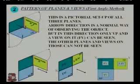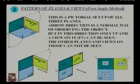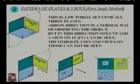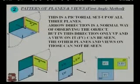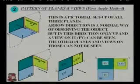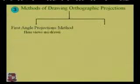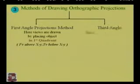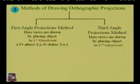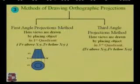This is the pattern of the reference planes and their corresponding views. On the vertical plane, the front view projection is done; on the horizontal plane, the top view projection is carried out; and on the profile plane, both left-hand side and right-hand side view projections are done. To draw orthographic projections there are two methods: the first angle projection method and the third angle projection method. In the first angle projection method, views are drawn by placing the object in the first quadrant.